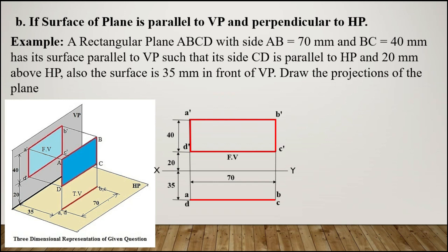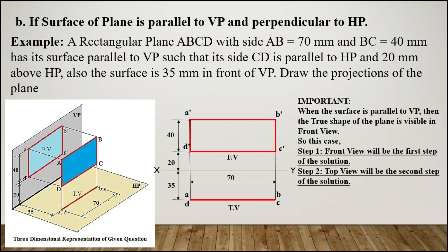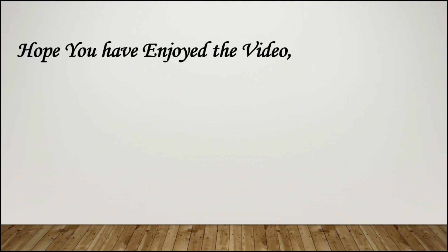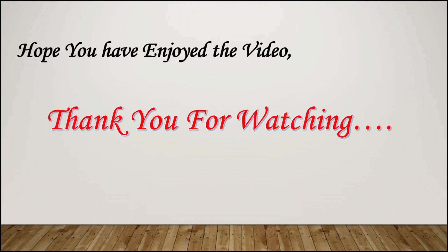Naming the top view: on one side we have A and D, and on the other B and C. Important note: when the surface is parallel to VP, the true shape of the plane is visible in the front view. So for this case, the front view is the first step and the top view is the second step. This was all about case one. Thank you for watching — please like and subscribe and stay connected for the next videos.